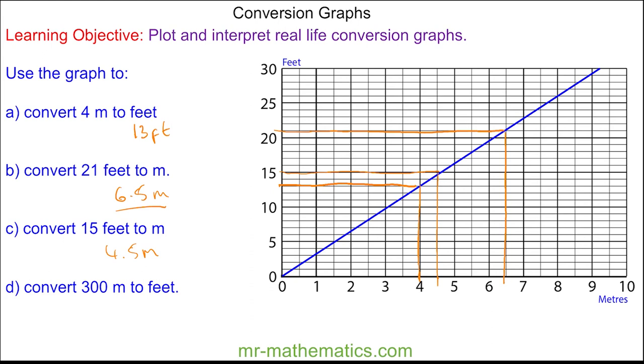And finally for question D, 300 meters. But you can see this is a problem because our graph only goes up to 10. But what we can do—we know 6 goes into 300 because it goes into 30. So this would be 6 meters multiplied by 50. And we can convert 6 meters, which is on our conversion graph, and this is approximately 19 feet. So then we have 19 multiplied by 50, which is 950 feet.